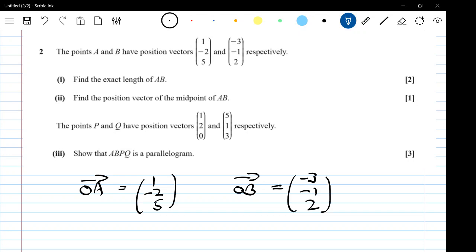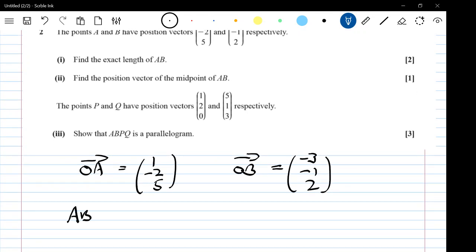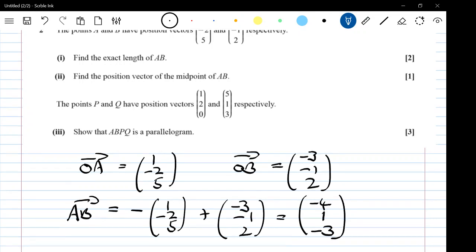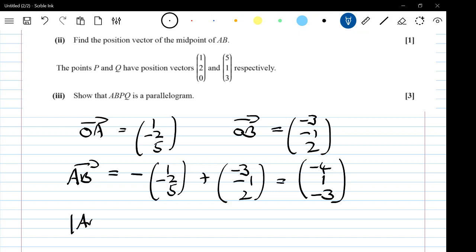So AB is minus OA plus OB, which gives me (-4, 1, -3). And the question was find the exact length, so the exact length is the square root of minus 4 squared plus 1 squared plus minus 3 squared, which is root 26. Slightly bizarre thing where the mark scheme allowed you to have 5.1 as the answer.